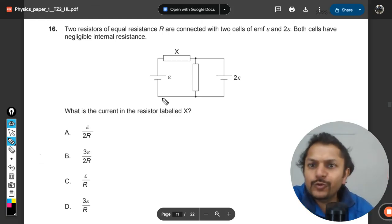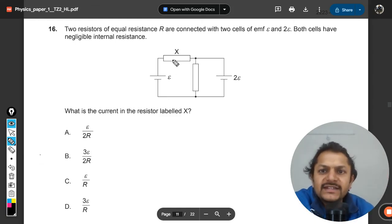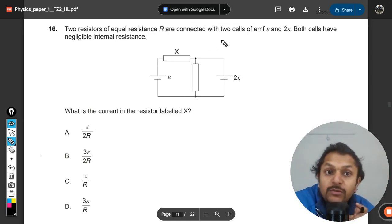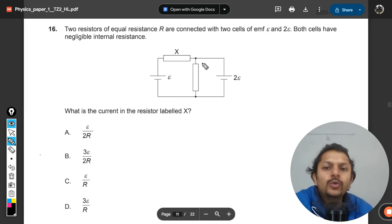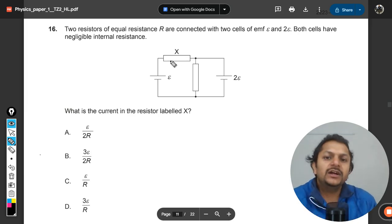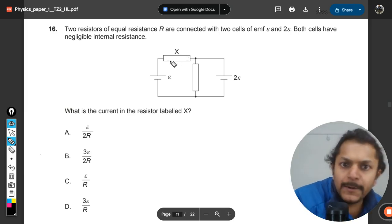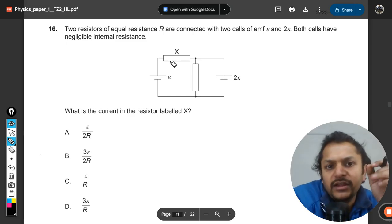Let's see what is there in this question. Two resistors of equal resistance R are connected to two cells of emf e and 2e. Both cells have negligible internal resistance. What is the current in the resistor labeled x? So you want to find the current in this.